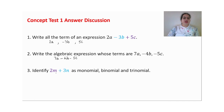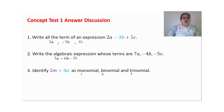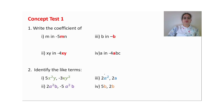Identify whether 3m plus 2n is a monomial, binomial, or trinomial. 'Mono' is related to one, 'bi' is related to two, and 'tri' is related to three. Since there are two terms, this is a binomial.